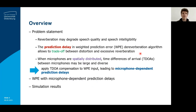When considering an acoustic sensor network with spatially distributed microphones, the time differences of arrival, or TDOAs, between the source and the different microphones may be large and diverse. Here, using a fixed prediction delay may lead to a suboptimal trade-off, where the overall delay in each microphone may be too small or too large. Therefore, we propose applying TDOA compensation to the WPE input in order to optimize this trade-off for all microphones, which leads to microphone-dependent prediction delays.